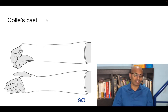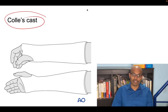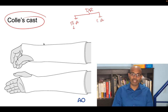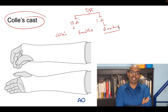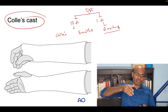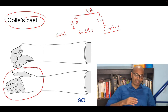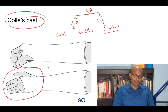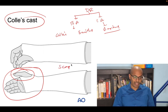The Colles cast is used for a Colles fracture — that is, a distal radius fracture with dorsal displacement of the distal fragment. It is applied in a hand-shaking position. A very important distinction: the thumb is NOT included in the Colles cast. If the thumb is not involved, it is a Colles cast.